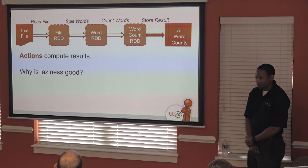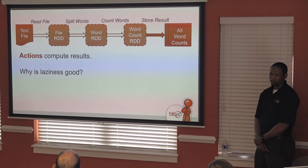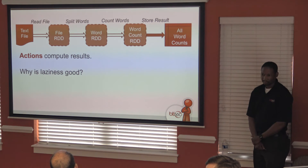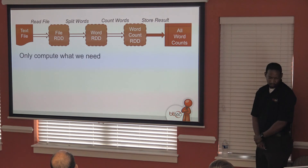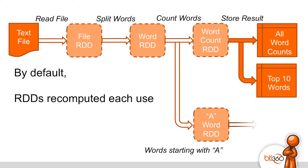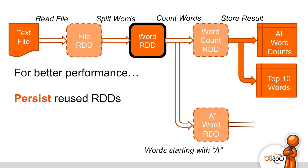Why is lazy evaluation good? You only do the work you need to do — you only compute what you need. As you can see here, there's a fork: sometimes we need all the words, and sometimes we only need the top ten words. This allows you to focus more on the algorithm and worry less about the performance of your transformation pipeline. By default, RDDs recompute each time, so sometimes for better performance we would like to persist an RDD. If it's expensive to compute, we can take the existing result and reuse it.